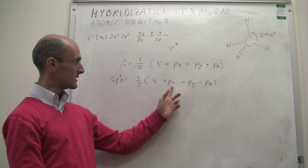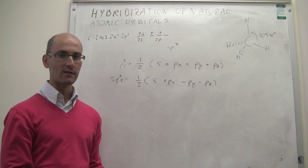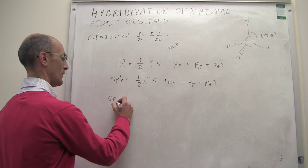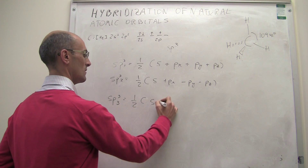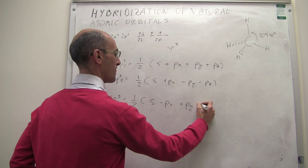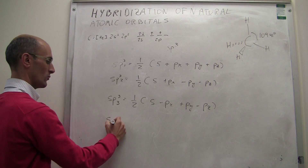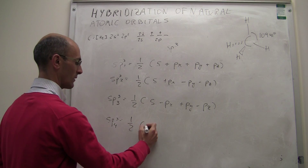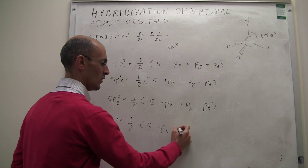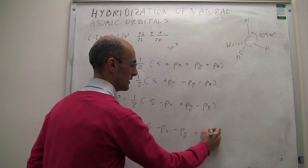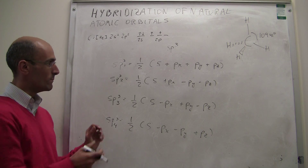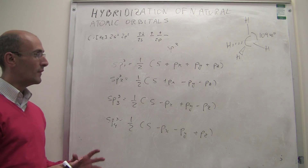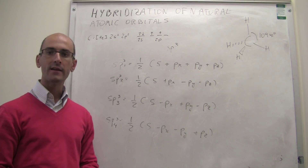This mixing of orbitals with different coefficients gives you a different orbital pointing in a different direction. The third combination has yet another set of coefficients, and the fourth orbital mixes the 2s with the 2px with a change in sign, 2py with a change in sign, and 2pz with a positive sign. When we mix the orbitals in this fashion, they should be pointing along a tetrahedron. This is actually quite well explained in a picture added to your lecture notes for chapter 10.